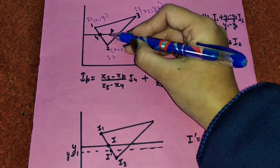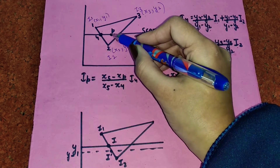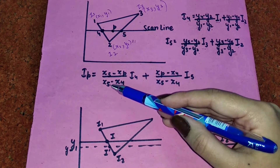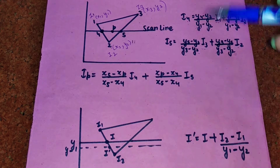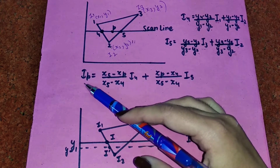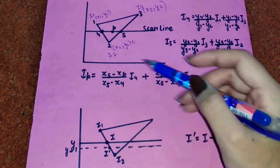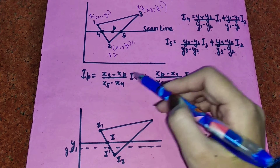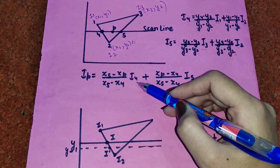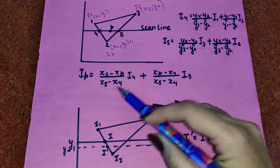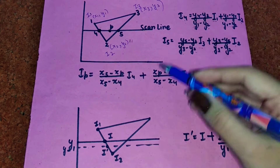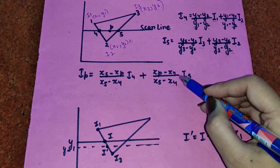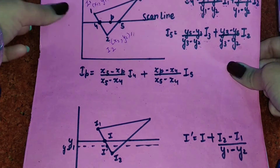To calculate the intensity at point P, which lies between points 4 and 5, note that we now use the x-coordinate instead of y. The formula is: Ip = [(x5 - xp)/(x5 - x4)] * I4 + [(xp - x4)/(x5 - x4)] * I5. The denominator remains x5 minus x4. Where x5 is used in the numerator we multiply by I4, and where x4 is used we multiply by I5.